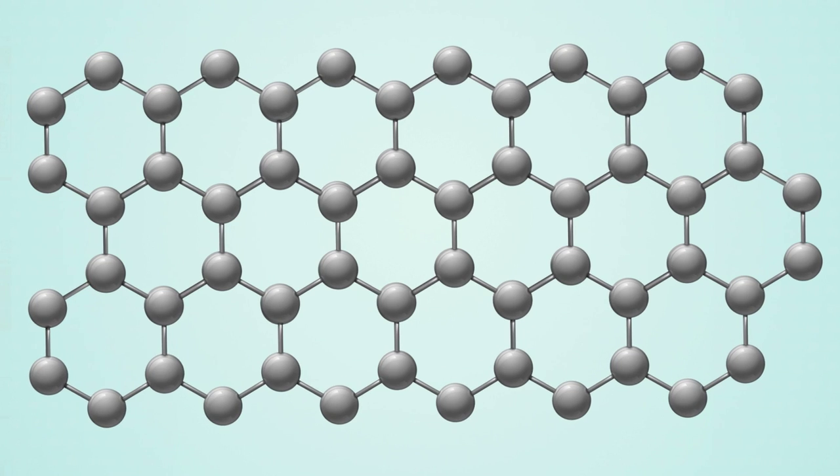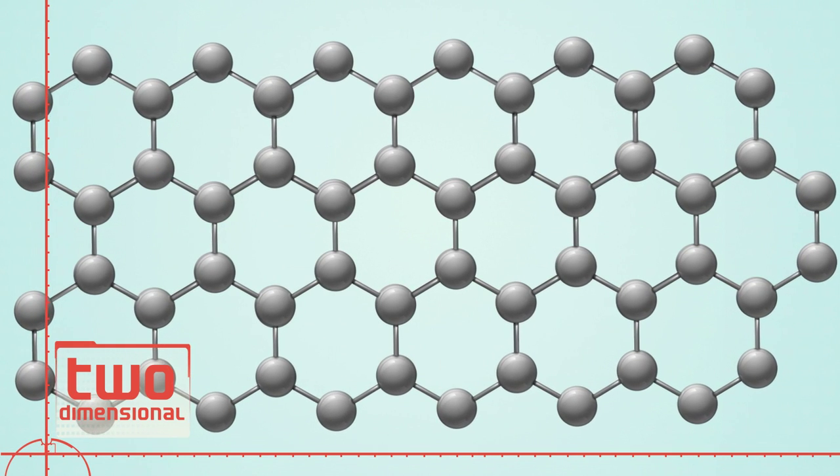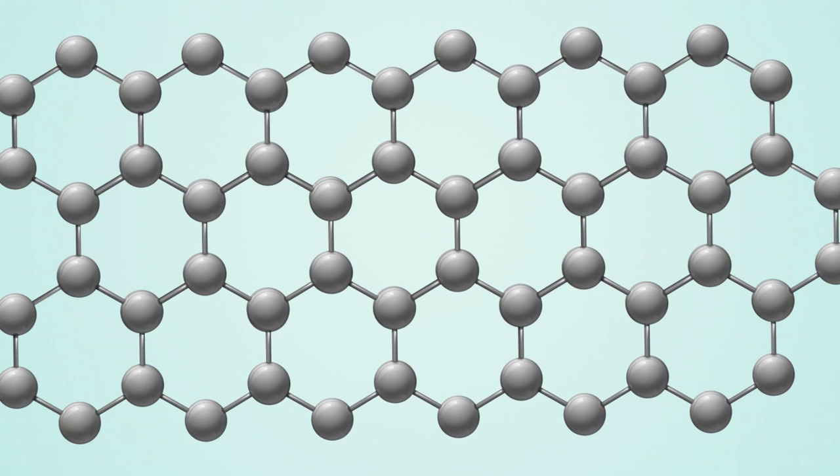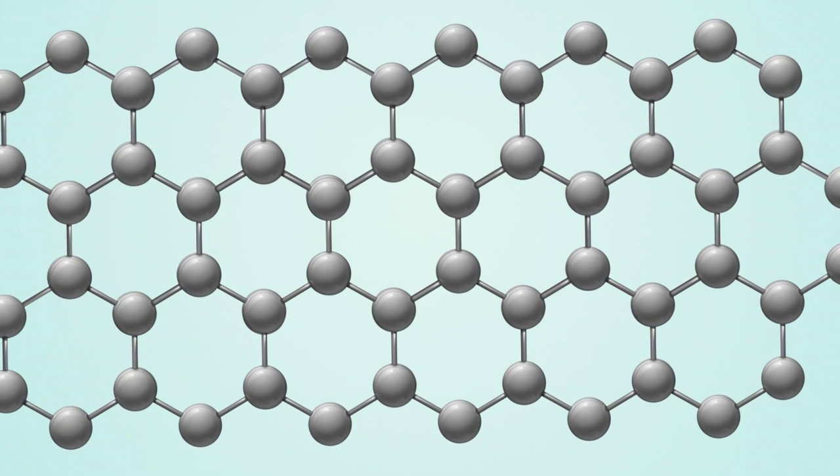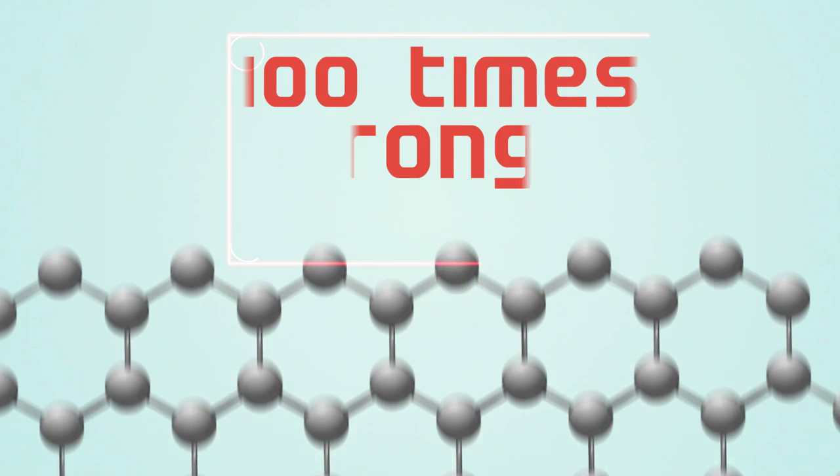Because graphene is only one atom thick, it's considered to be a two-dimensional material. Despite being the thinnest known material, it's also the strongest material ever tested, a hundred times stronger than steel.